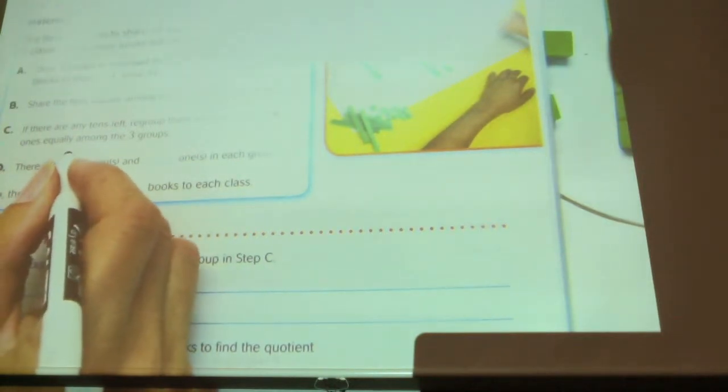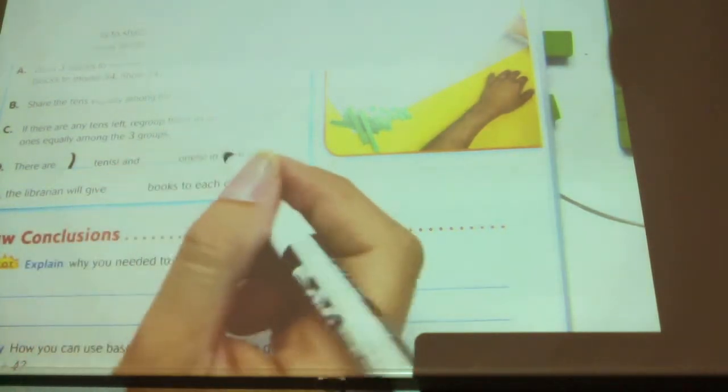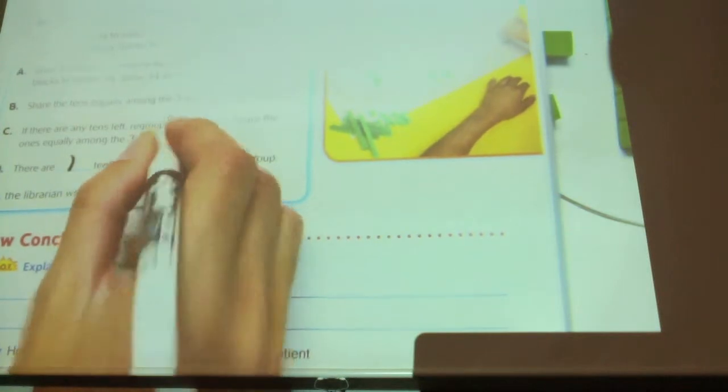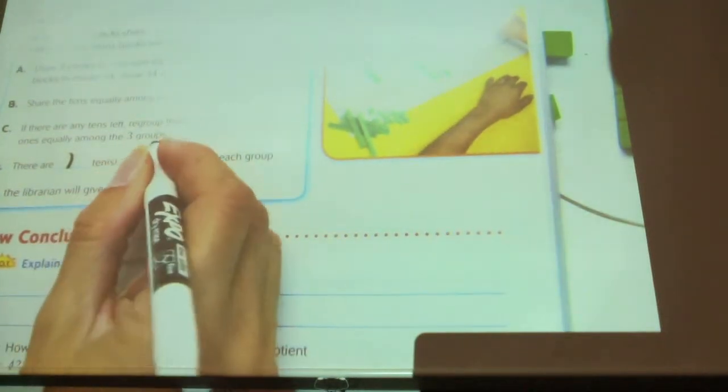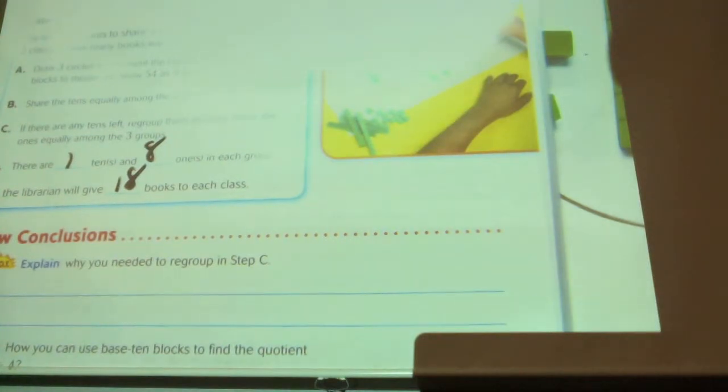So on my paper right here, it asks me, there are how many tens? One. How many ones in each group? Eight. So that means how many total? Eighteen. One ten plus eight ones equals eighteen. Go ahead and write it in on your paper.